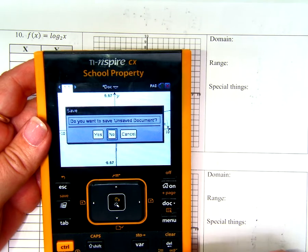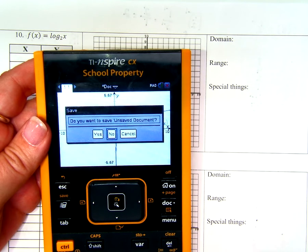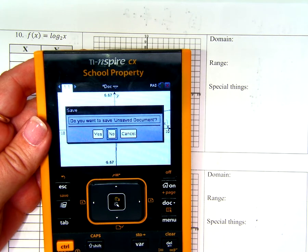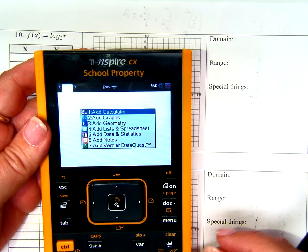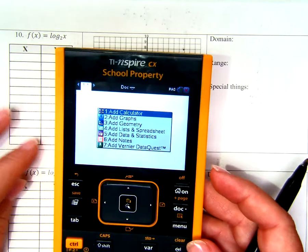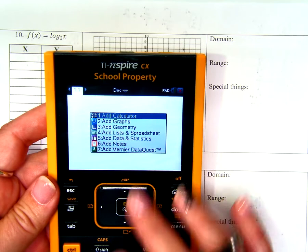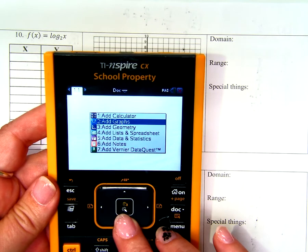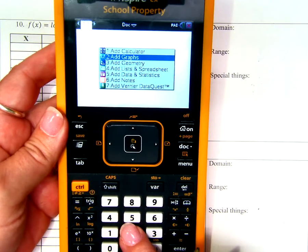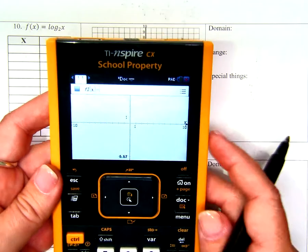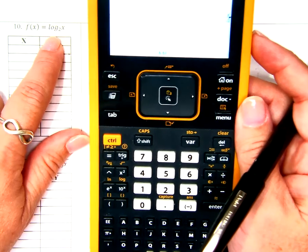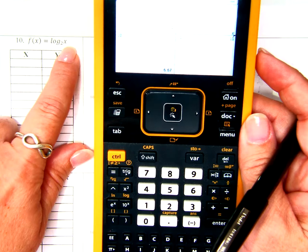Anytime it says, do you want to save your document, unless I tell you otherwise, which I probably won't, the answer is no. Because then I start with a brand new, fresh document. What kind of document do I want to start with today? I need a graph. I can either press the down arrow, or I can literally just press the number 2. And it'll start, it'll give me a graph.